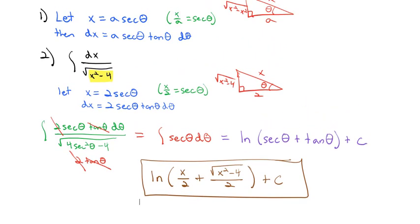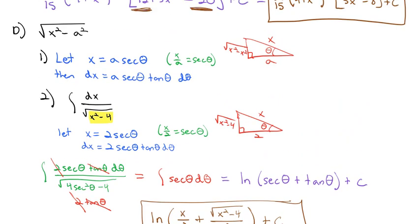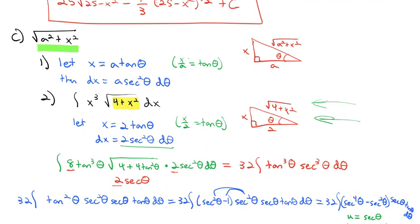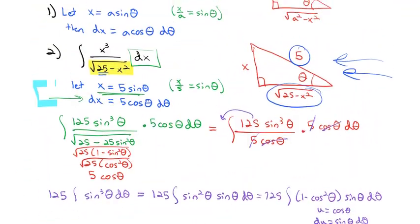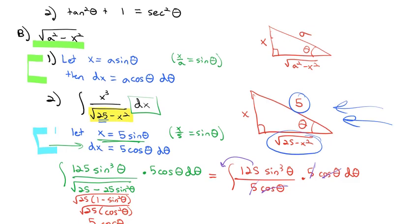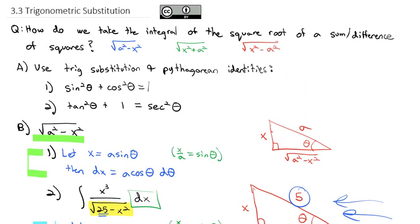All trig substitution follows the same pattern. If we have a difference of squares with x first — x squared minus a squared — let x equal a secant theta. If we have a sum of squares, let x equal a tangent theta. If we have a difference of squares with the perfect square first — a squared minus x squared — let x equal a sine theta. Then all the problems solve in pretty much the same way. Practice some of these and we'll talk about them more in class. Good luck.